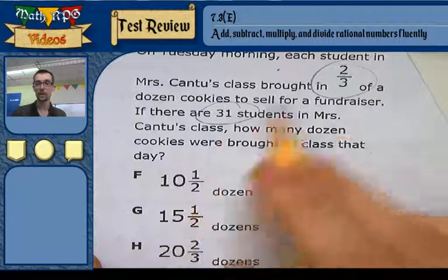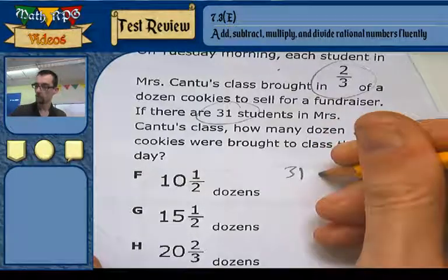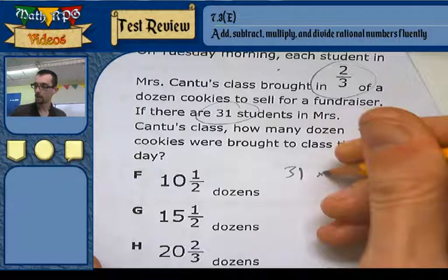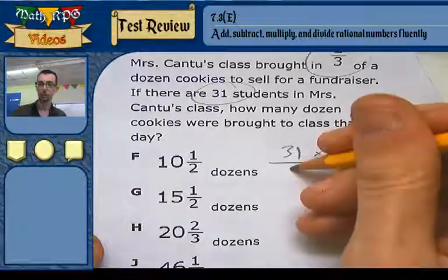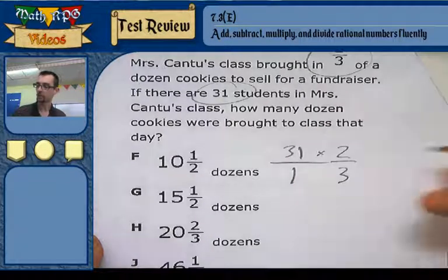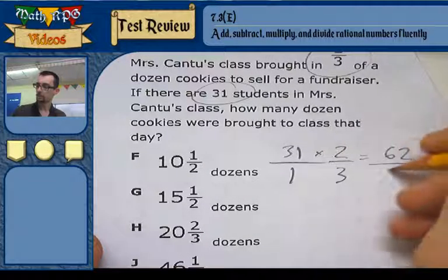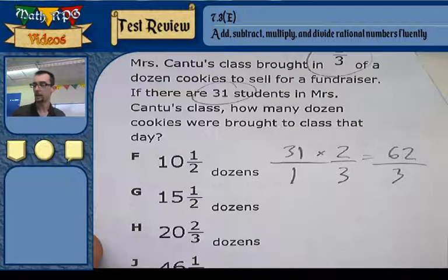So if I multiply 31 times two-thirds, that should give me my answer. We talked about multiplying fractions. First step is make sure that they're both fractions, so I'm going to put 31 over 1. And now I just multiply straight across. 31 times 2 is 62, and 1 times 3 is 3. There's my answer. Now I've got to turn this into a mixed number.